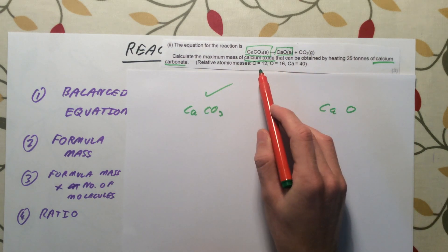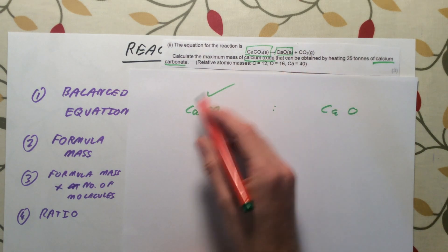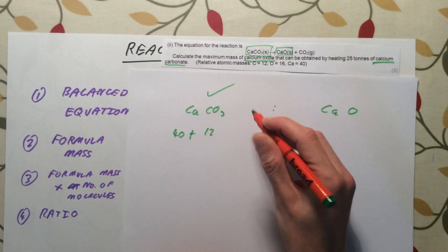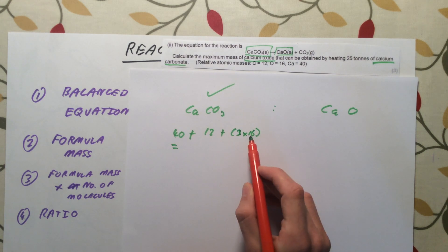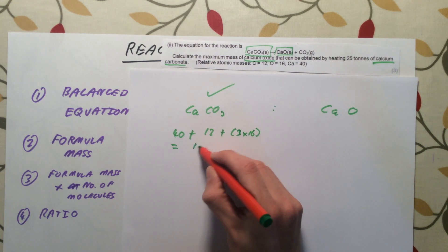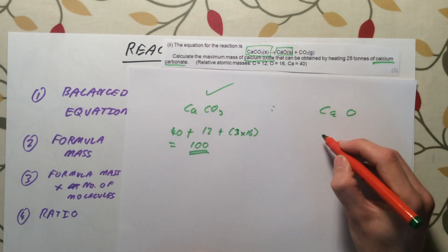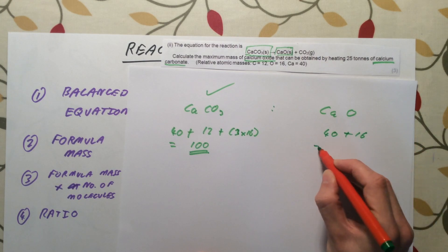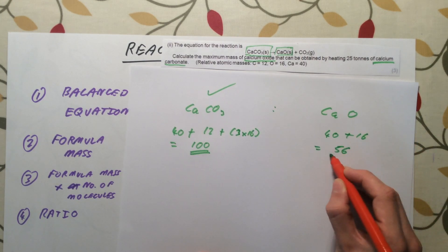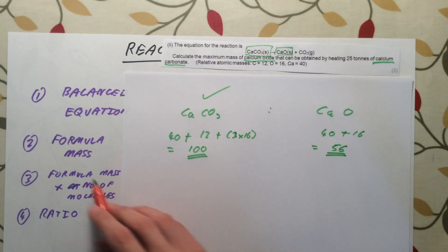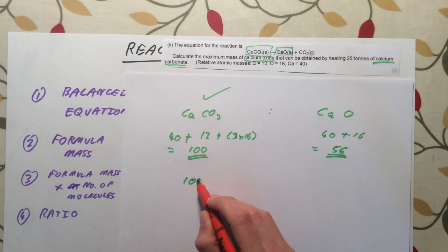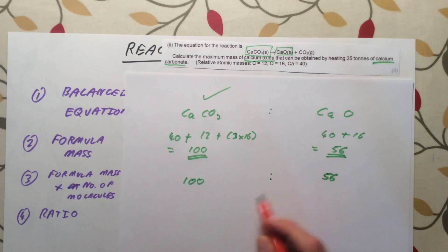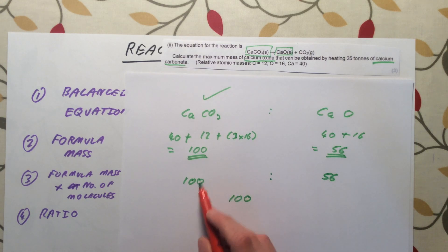For formula masses: calcium carbonate CaCO₃ is 40 (calcium) + 12 (carbon) + 3 × 16 (oxygen) = 40 + 12 + 48 = 100. Calcium oxide CaO is 40 + 16 = 56. Again, there are no coefficients in this equation, so formula mass times number of molecules gives 100 × 1 = 100 and 56 × 1 = 56. So our ratio is: 100 tons of calcium carbonate produces 56 tons of calcium oxide in a perfect world.